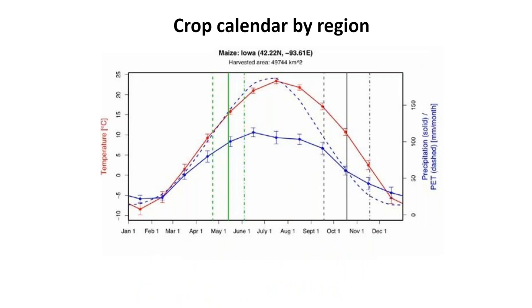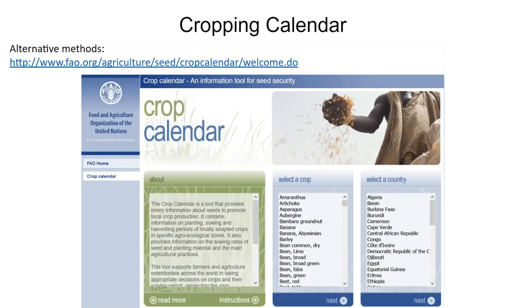If you know your crop is rain-fed, you can also go to generic climate datasets like WorldClim and plot precipitation to get an idea of when the rainy season starts. The FAO, with many partners, also put together a resource that for most crops and most countries gives you an idea of when crops are grown and under which modalities — no spatial data but still a very good resource.